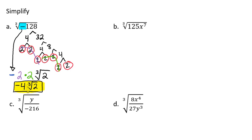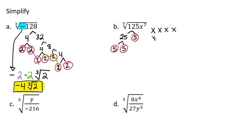Let's do another example — this time, let's put a variable in there. For problem B, we have the cubed root of 125x to the 7th. We're going to ignore the x to the 7th for a moment and break down our 125. When I think of 125, I think of $1.25 — and how many quarters would that take? That would take 5 quarters. So 5 is a prime number, and 25 breaks down into two 5s, which are also prime. Now, x to the 7th represents 7 x's, and since they're singles, they can all have their own circle because they've been broken down.